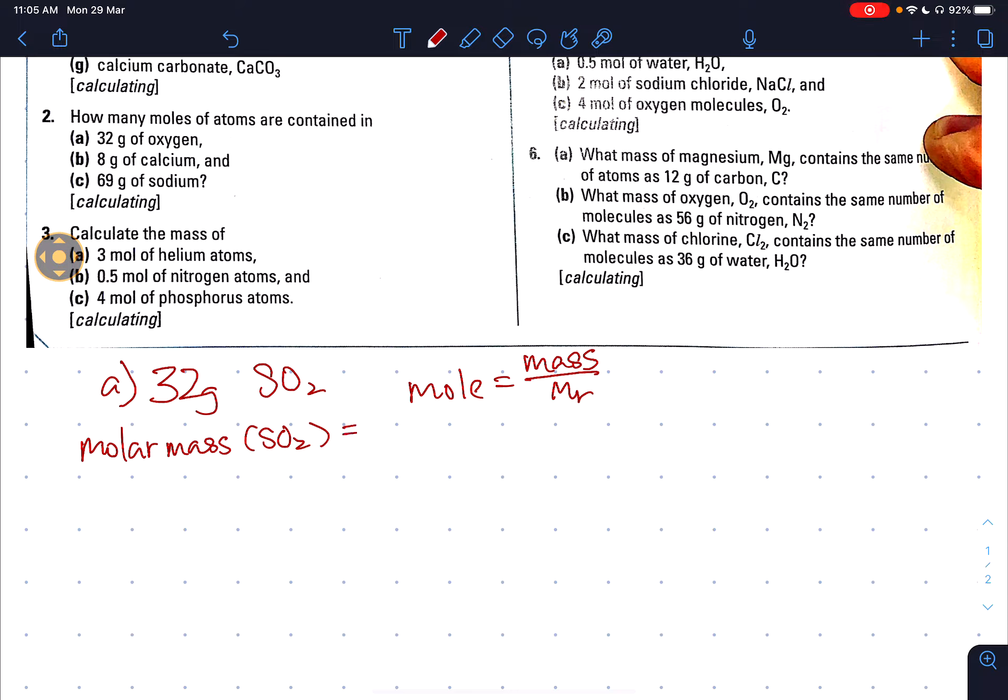We can find it from periodic table: 32 plus 2 times 16 because 2 oxygen. I believe this is 64 grams per mole. So what this means is that when I have 64 grams of SO2, I have one mole of SO2. So now the question asks for 32 grams of SO2.